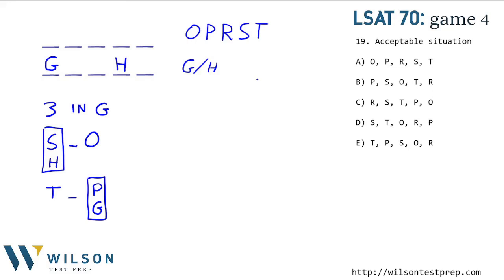LSAT 70, Game 3. We have a series of lectures on birds: O, P, R, S, and T. They're each going to be in a room, either G or H. We've set this up as a double ordering problem where we have one row for the topic of the lecture and another for the location.